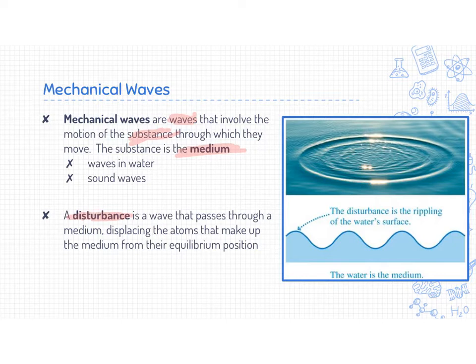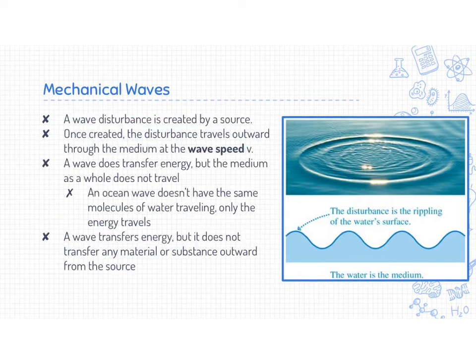There are some more involved things happening — the sound travels through air and then gets recorded on my iPad — but we won't get into that now. A mechanical wave is created by a disturbance, which is the source of the wave. Once created, it travels outward through a well-defined speed known as the wave speed.